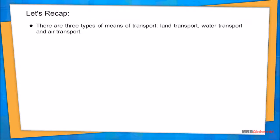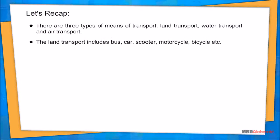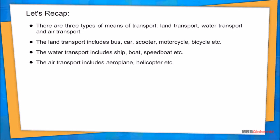Let's recap: there are three types of means of transport — land transport, water transport, and air transport. Land transport includes bus, car, scooter, motorcycle, bicycle, etc. Water transport includes ship, boat, speedboat, etc. Air transport includes aeroplane, helicopter, etc.